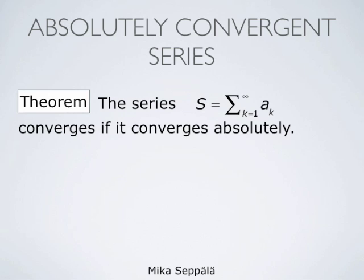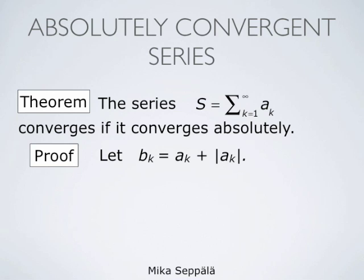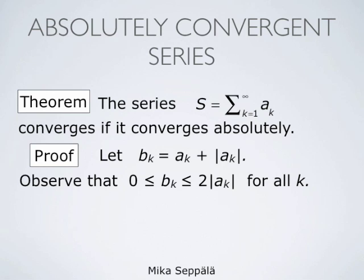We assume that the series s converges absolutely, and we have to show that it converges. To that end, consider the quantities bk defined by setting bk equals ak plus the absolute value of ak. Observe that each bk is by definition non-negative and at most two times the absolute value of ak, since either bk equals zero or it equals two times the absolute value of ak, and this is true for all k.